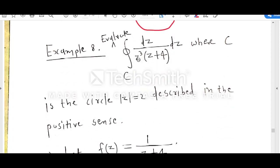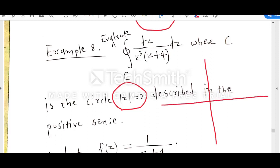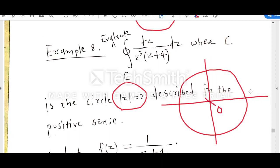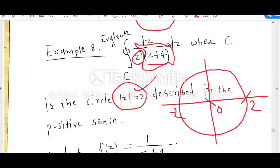Let us take another example. The given function is 1 divided by z cubed times z plus 4, and C is the circle mod z equal to 2. This function is not analytic at z equal to minus 4 and at z equal to 0. From a rough sketch of mod z equal to 2 with origin inside, minus 4 will be outside this simple closed contour. So we consider f(z) equal to 1 divided by z plus 4, since 1 upon z plus 4 is analytic everywhere inside and on this simple closed contour C.